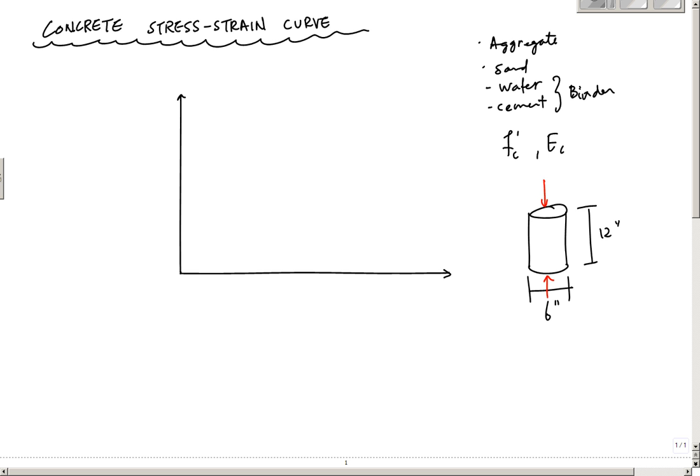And during the compression test, they're going to measure the load, calculate the stress, and then measure the strain, and they're going to plot a curve. That curve for concrete, the compressive stress, this axis representing compressive stress in units of KSI typically, or kips per square inch, and the strain, inch per inch, epsilon C for the strain in the concrete, or length per length.